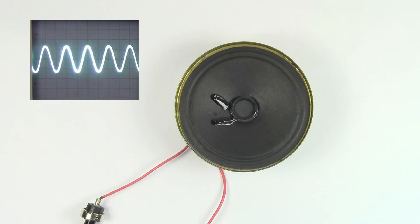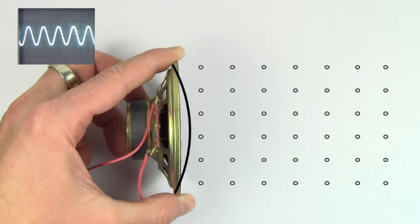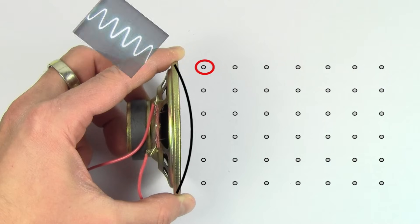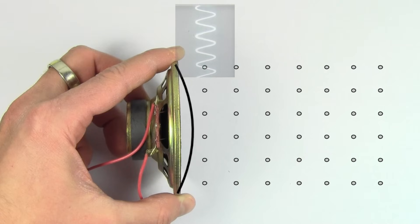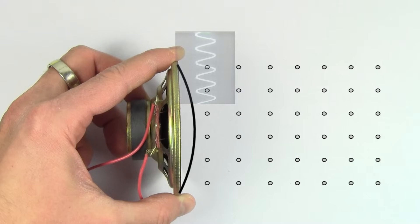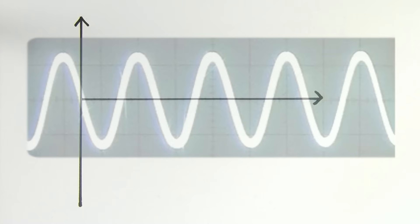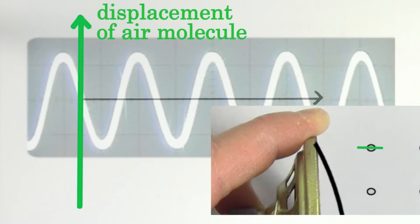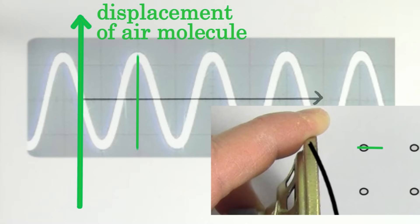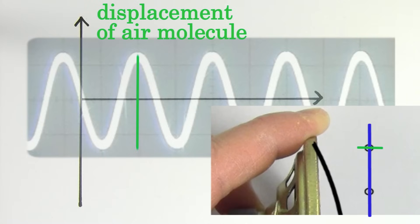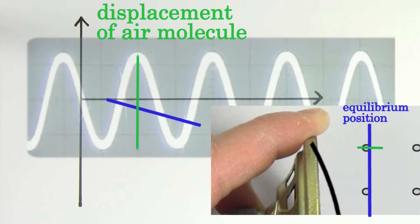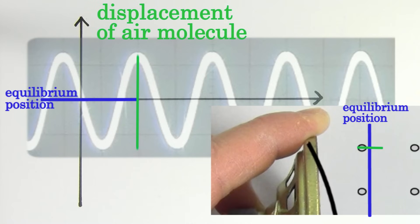We say that this shape represents the sound wave because if we focus on a single molecule of air, we see that it moves back and forth just like a sine or cosine graph. The horizontal axis here represents time and the vertical axis can be thought of as representing the displacement of that air molecule as it oscillates back and forth. The center line here represents the equilibrium position or undisturbed position of that air molecule.